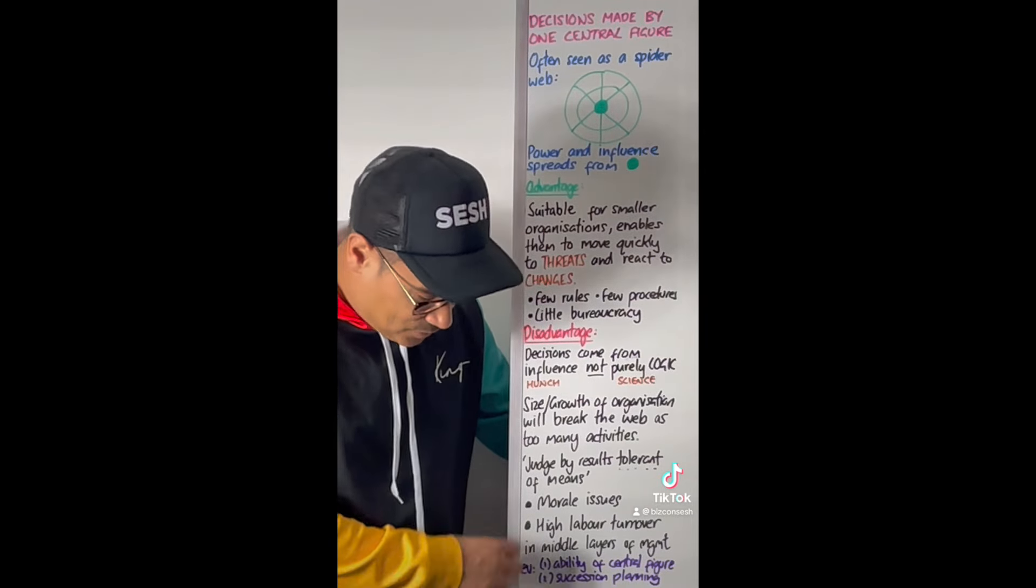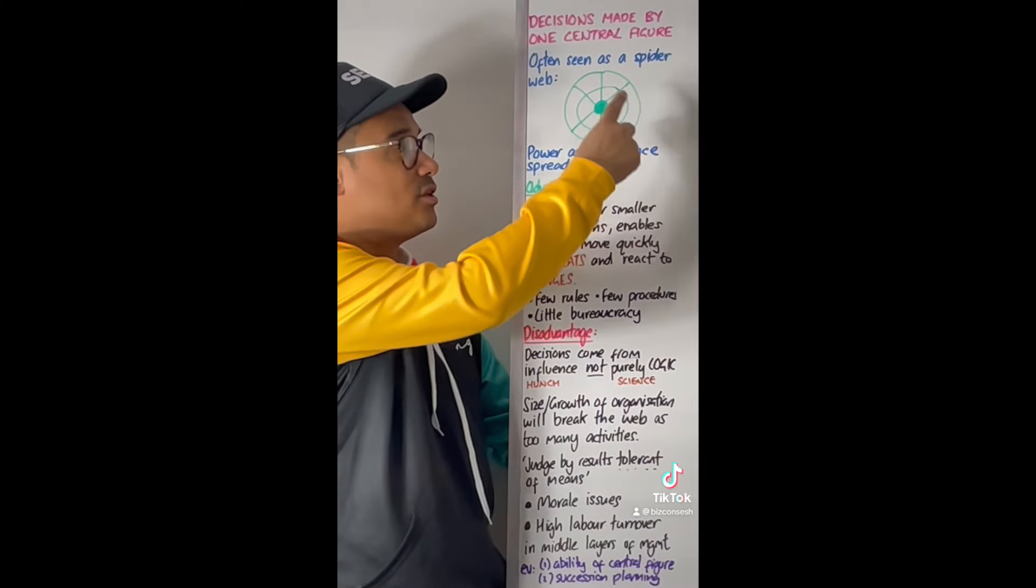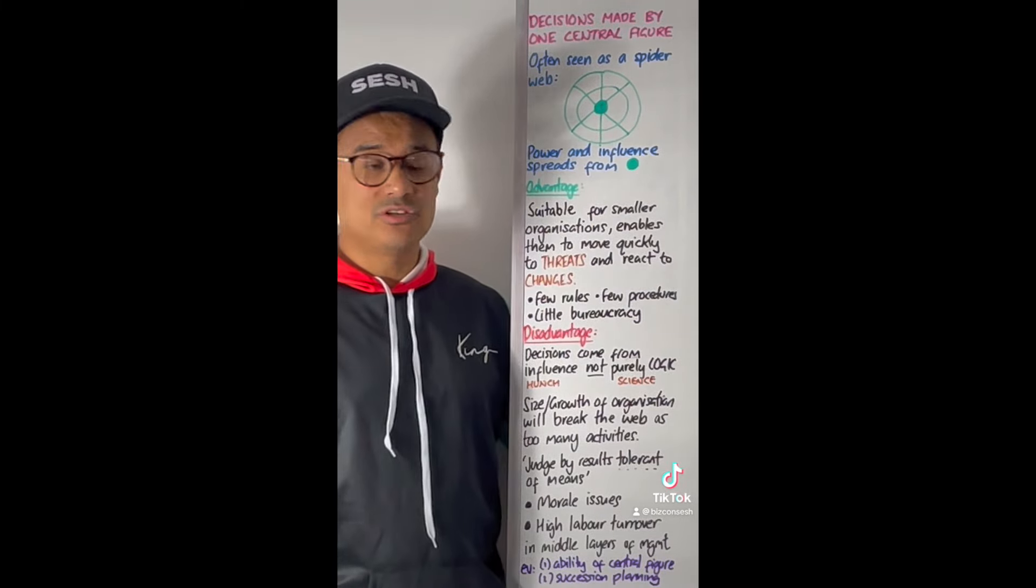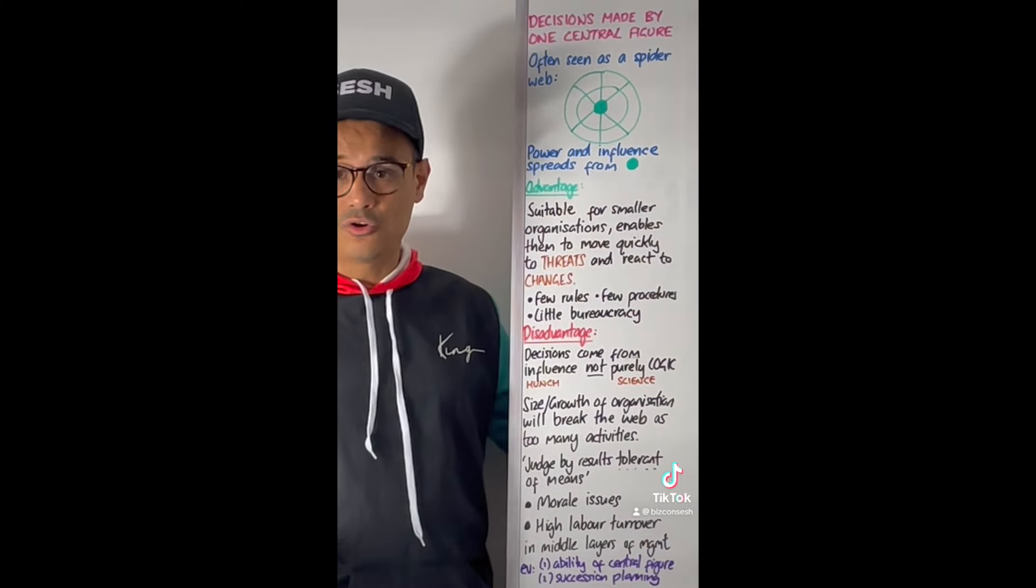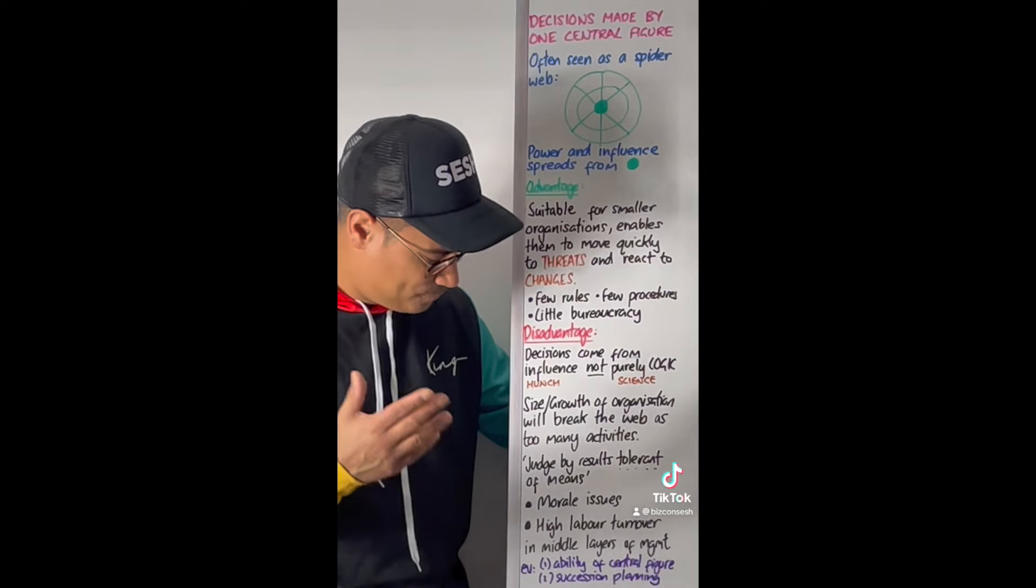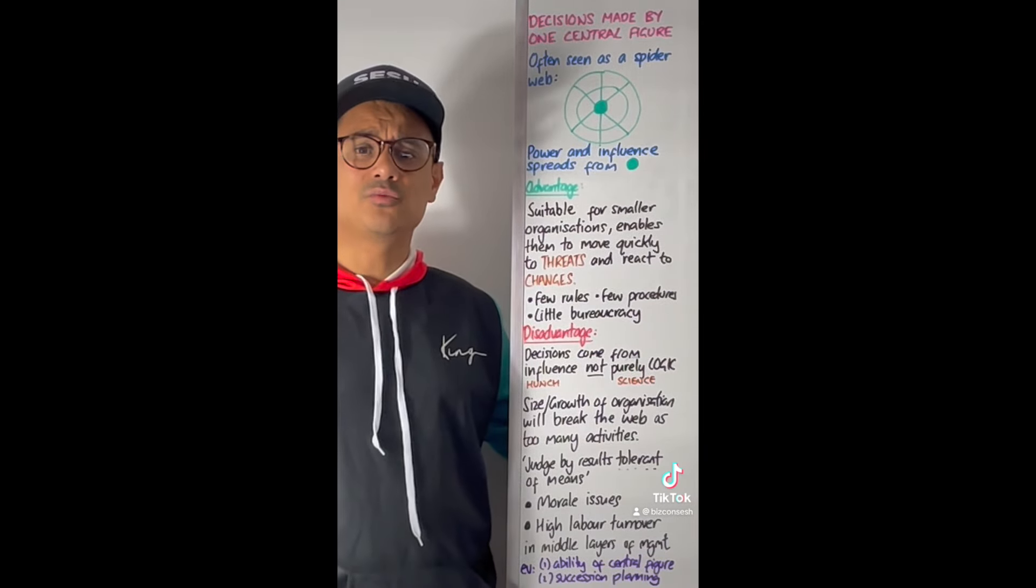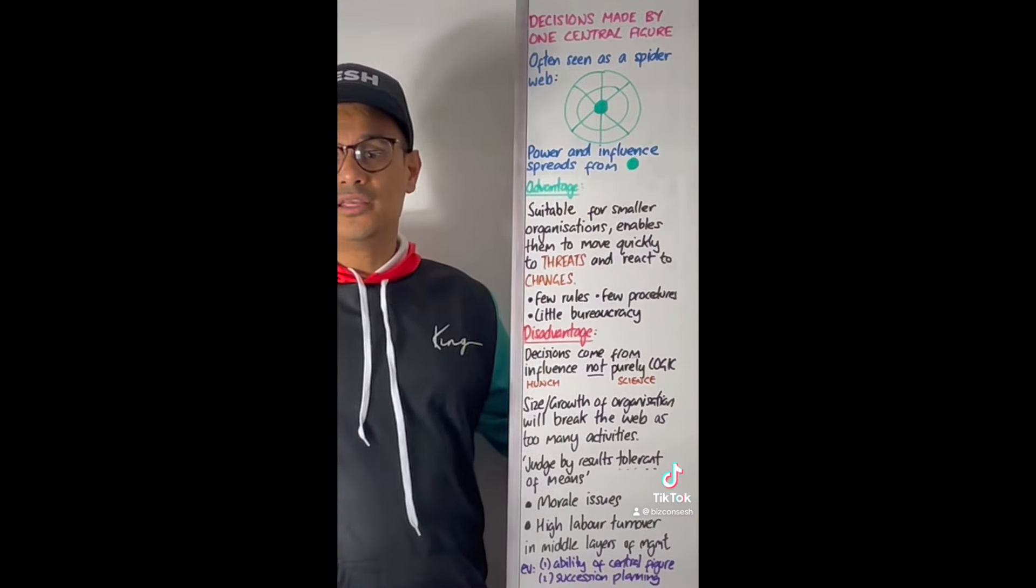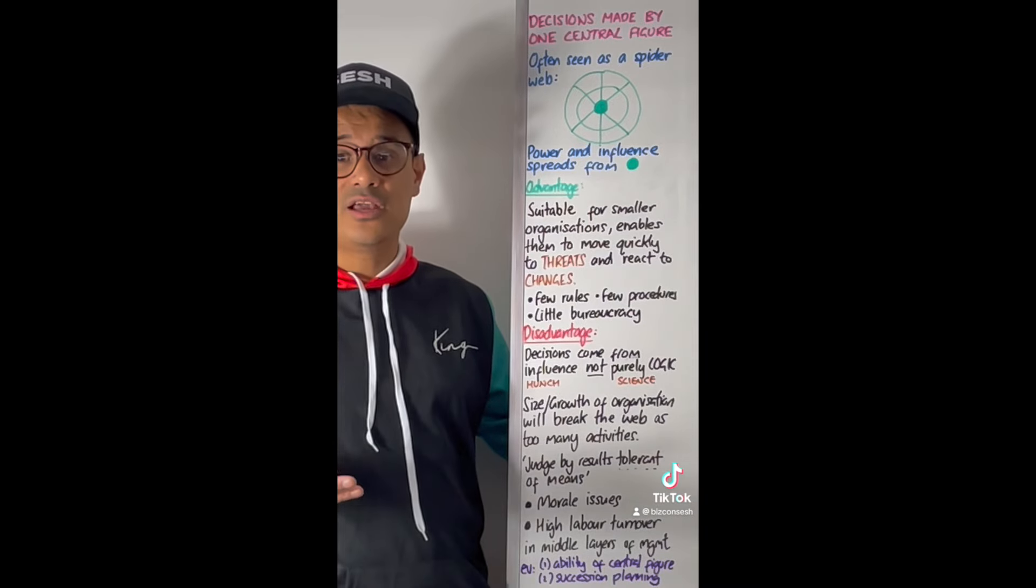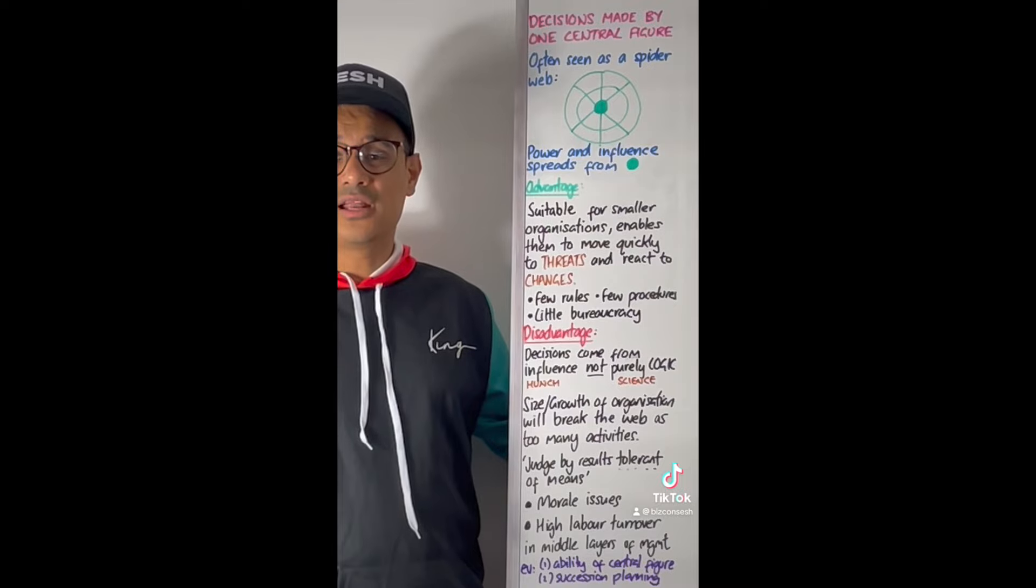The effectiveness really depends upon the skill set, the ability to get results done by that centralised figure. How good are they? Do they have the skills? There's also long-term implications when we think about power cultures. If that centralised figure is gone, you think about a web without a spider - it doesn't have much strength of surviving.